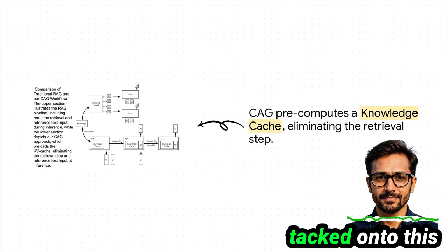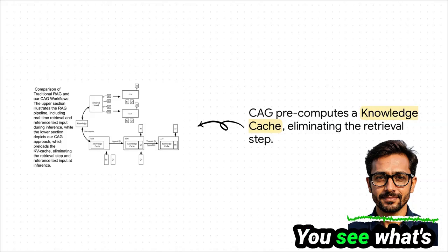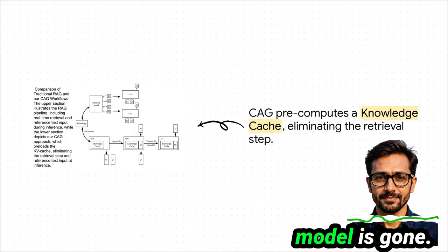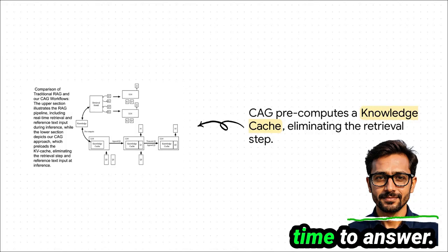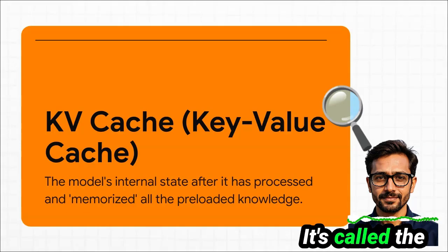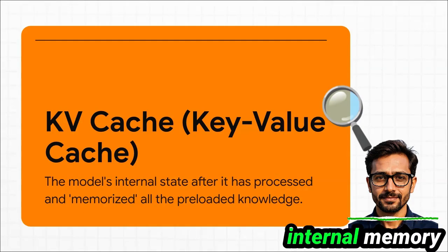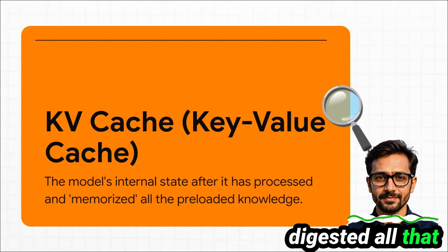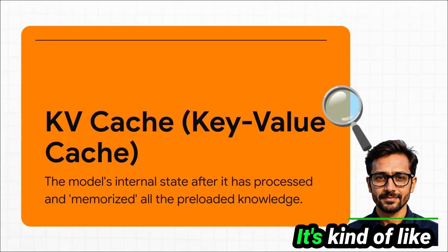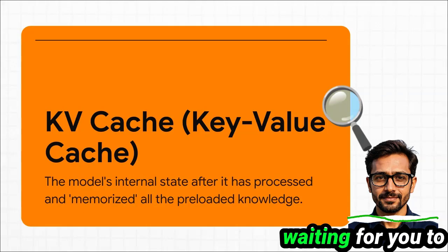it's just tacked onto this already loaded cache and sent to the LLM. You see what's missing? The whole retrieval model is gone. The process is streamlined down to a single step when it's time to answer. This knowledge cache has a technical name: the KV cache, or key-value cache. The easiest way to think about it is that it's just the model's internal memory after it has digested all that information up front — like the model has already read all your documents and has them memorized, just waiting for you to ask a question.